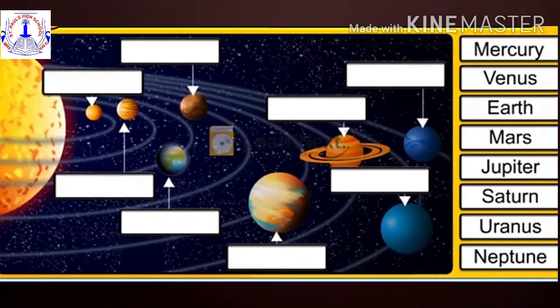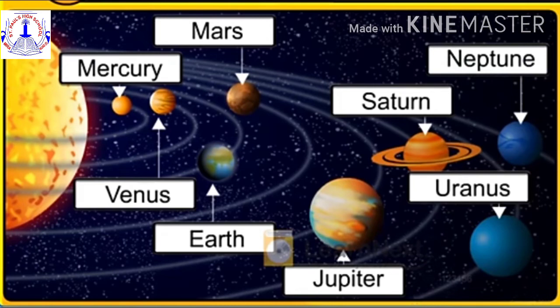Children, you have already learned about the planets, right? So tell me, how many planets are there in our solar system? Excellent! There are eight planets in our solar system. And children, I hope you remember the names of the planets too. Here's an activity to fill in the correct names of the planets in the columns given. Very good!